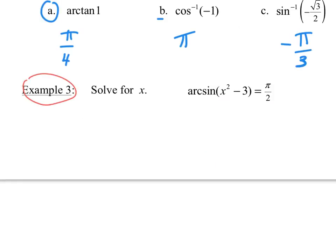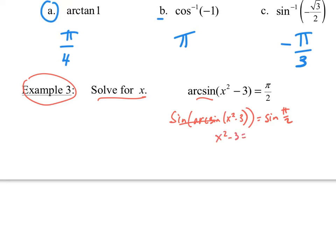Example 3: solve for x. I have the arc sine. Arc sine and sine are inverse functions — if we apply inverse functions to each other in the same composition, I can get rid of the arc sine. So I take the sine of both sides, which eliminates my arc sine. I get x² minus 3 equals sine of π/2. Sine of π/2 is 1, so x² equals 4, meaning x equals plus or minus 2.